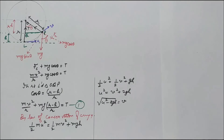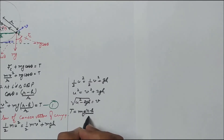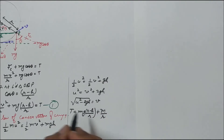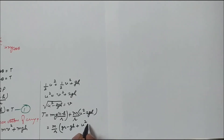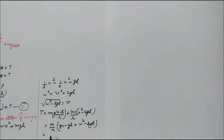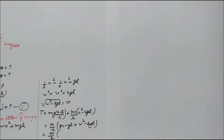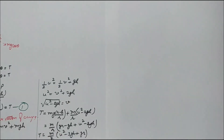The value of v² comes out to be u² minus 2gh. Substituting v² into equation 1, T comes out to be mg(r minus h) upon r plus m upon r times (u² minus 2gh). Here m upon r is common, so we get m upon r times (gr minus gh plus u² minus 2gh). Combining: minus gh minus 2gh gives minus 3gh. So the equation becomes T equals m upon r times (u² minus 3gh plus gr).